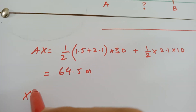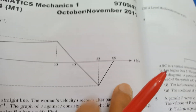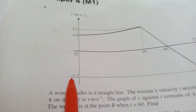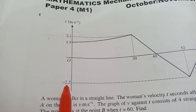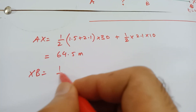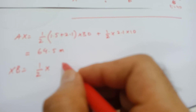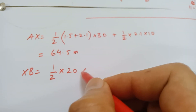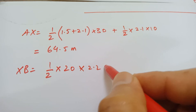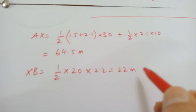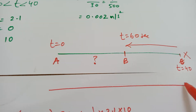Now let's find the distance XB. This is simply a triangular region: its base is 20 seconds and its height is 2.2 — the speed is written as −2.2 on the graph but I take the magnitude 2.2. Using the area of a triangle: ½ × 20 × 2.2 = 22 metres. So XB = 22 metres.